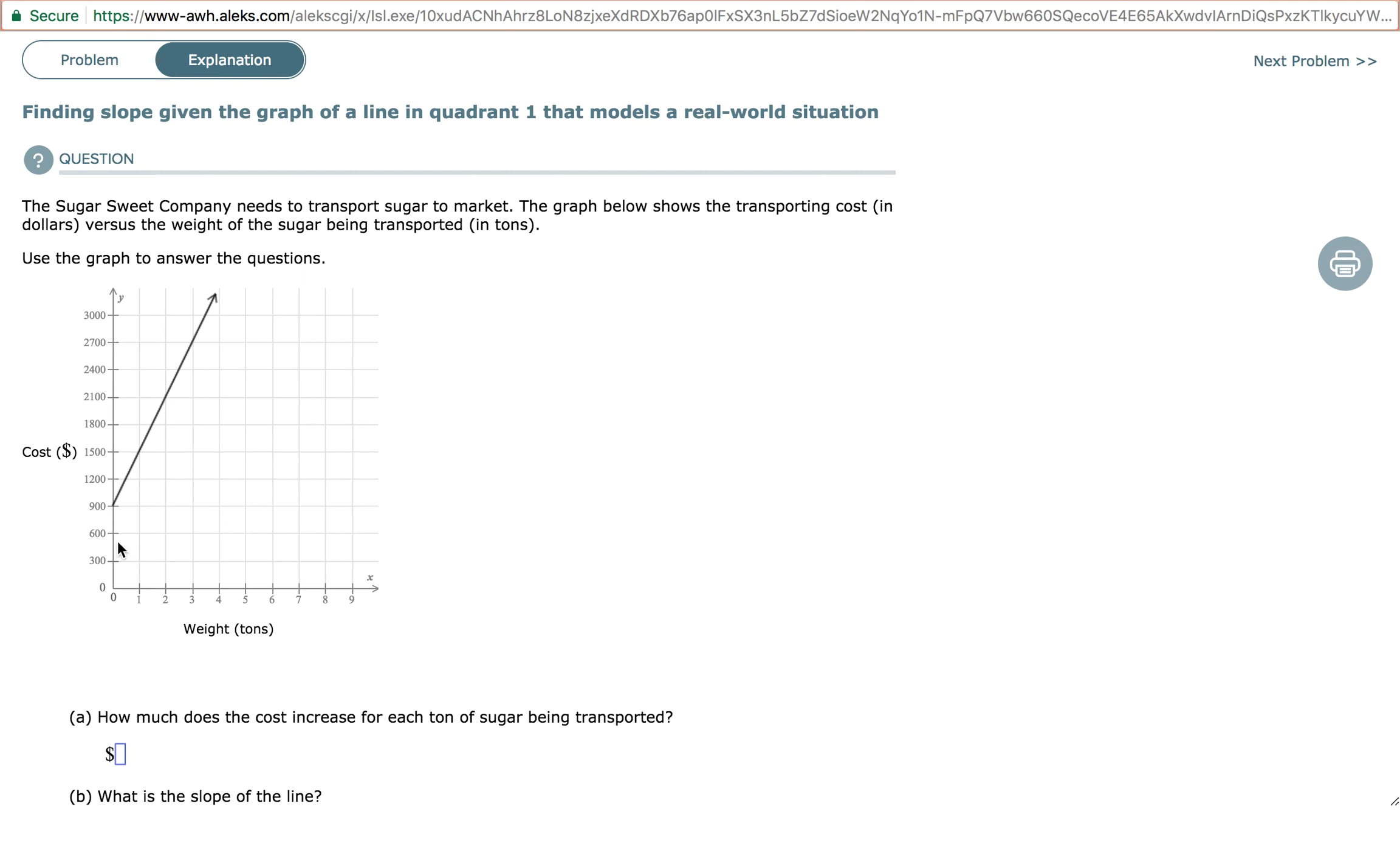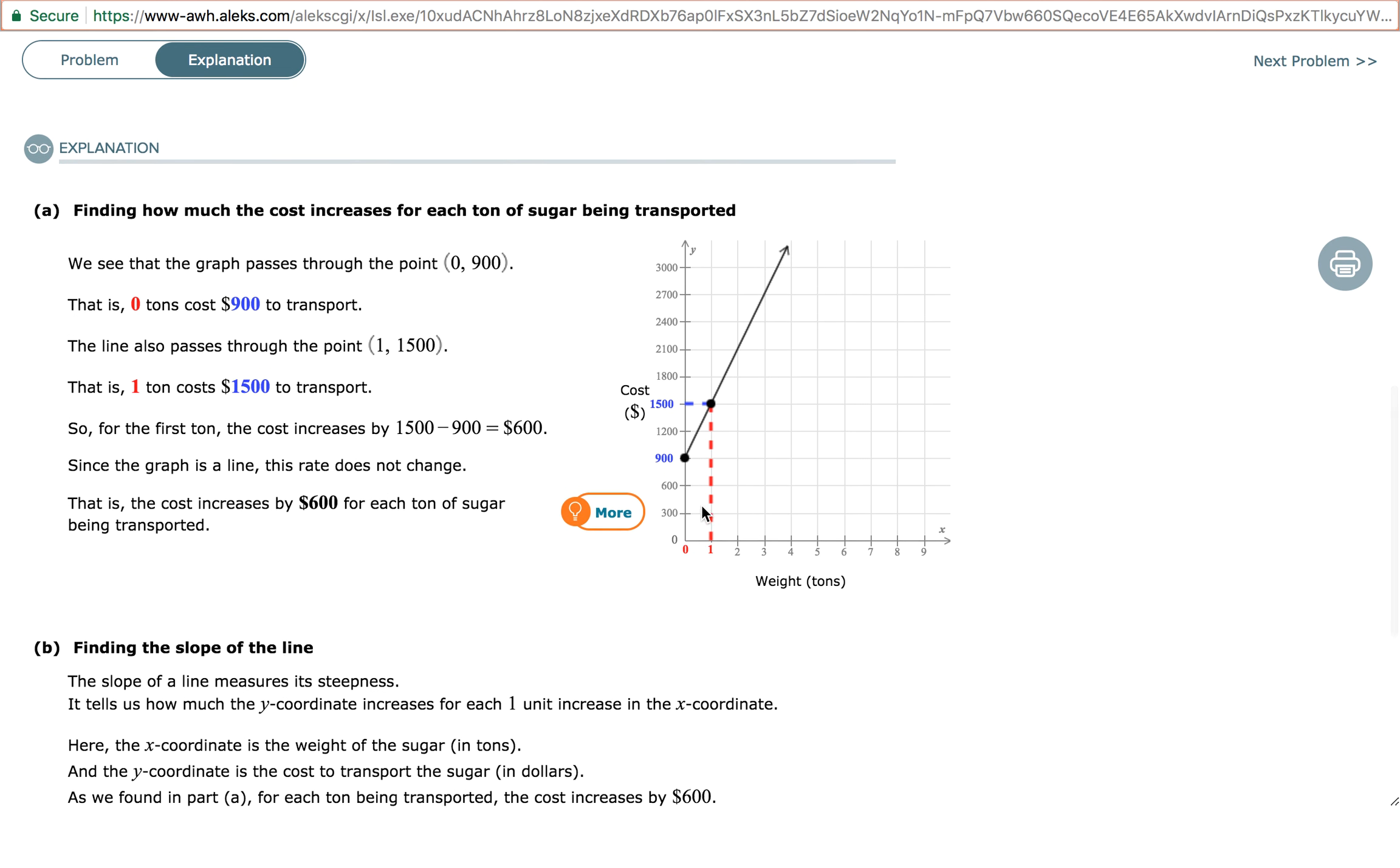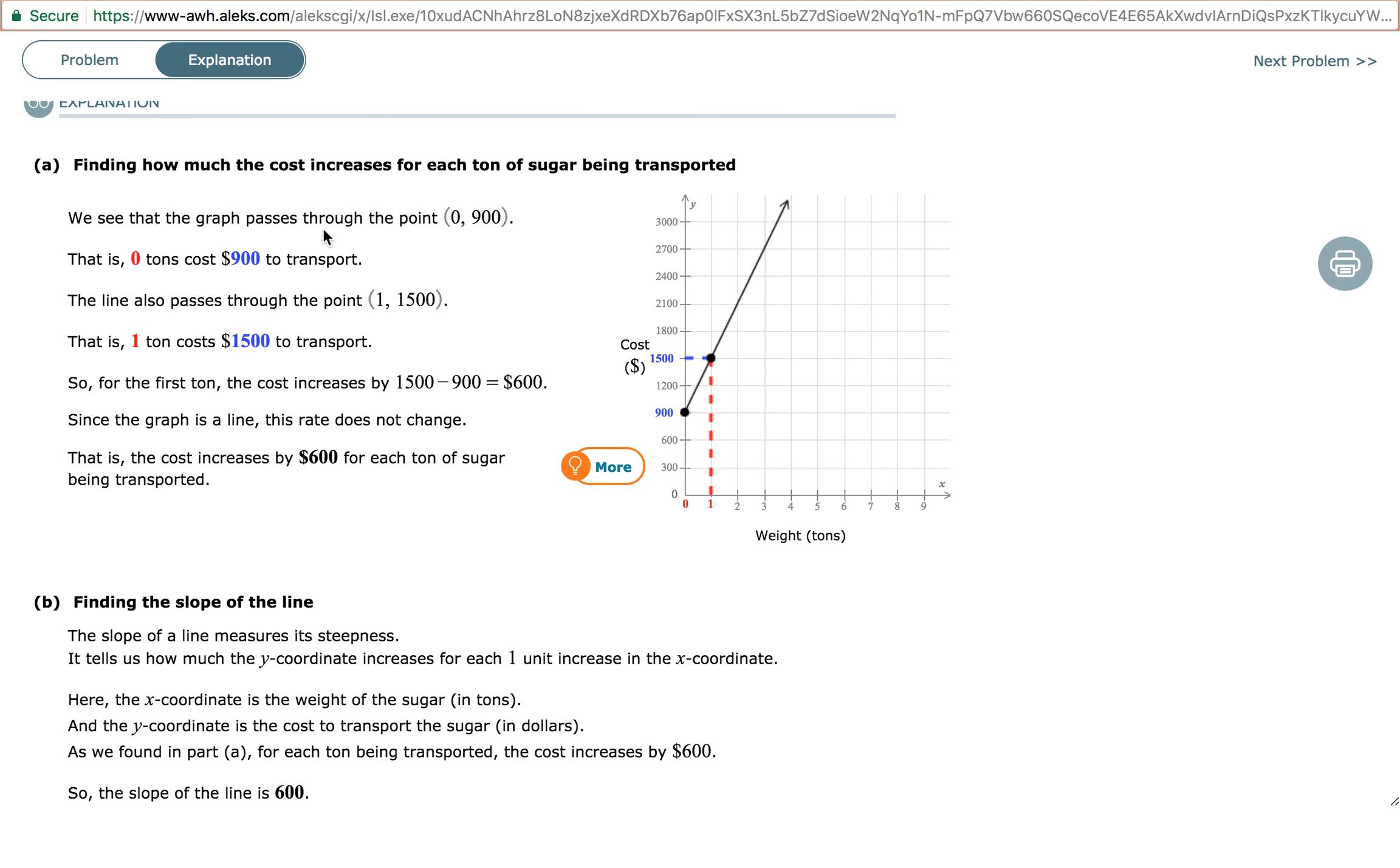So let's start by identifying some points on this graph. We'll take a look at the same graph down below with some color and the points already highlighted for us. When we see the graph, we know that the graph passes through the point 0, 900.